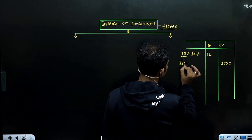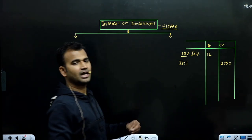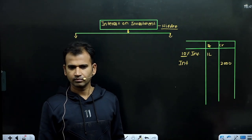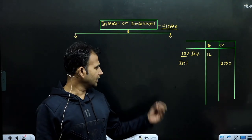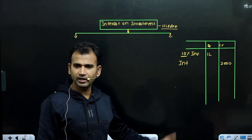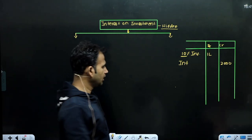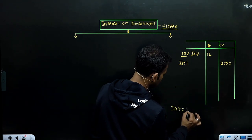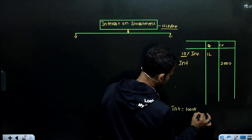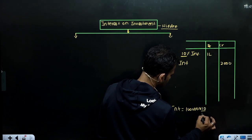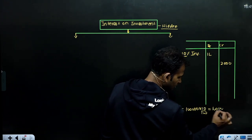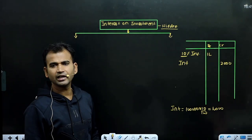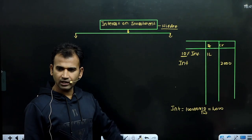आपका Investment पे आपको मिलना कितने percent चाहिए था Sir? ₹1,00,000 रुपए पे 10% बनते हैं ₹10,000। तो ₹1,00,000 पे Interest मिलना चाहिए था ₹10,000 — लेकिन मिला कितना? ₹2,000। इसका मतलब अभी ₹8,000 और लेना है।